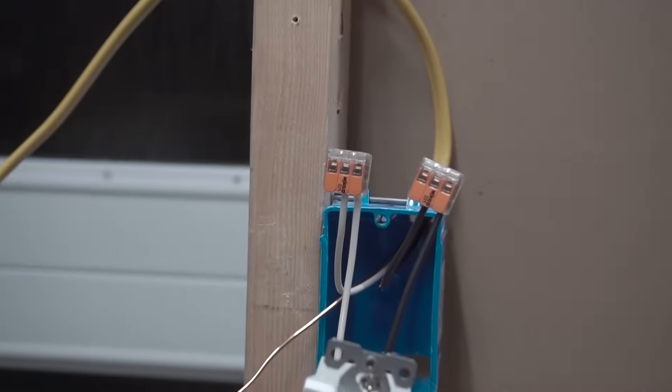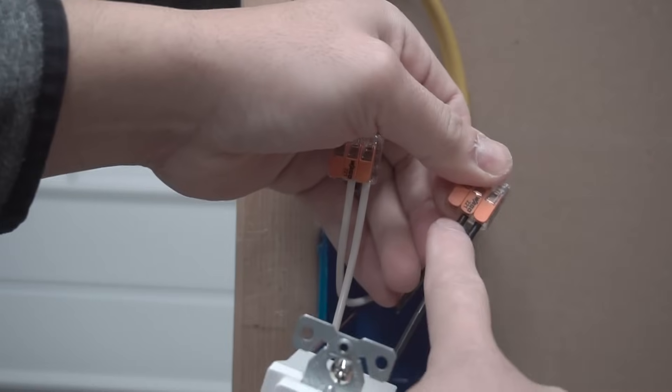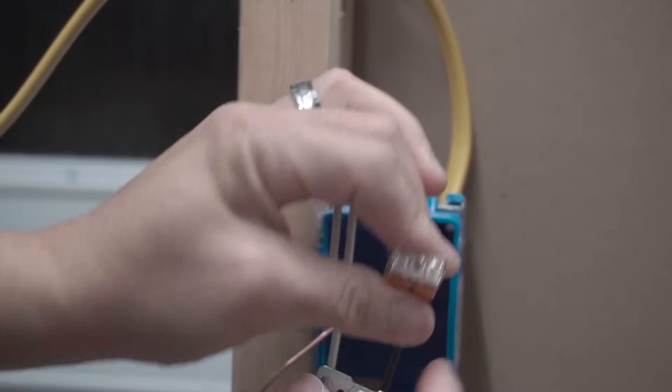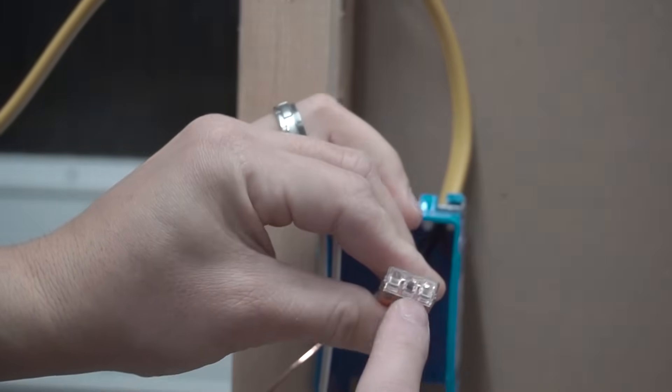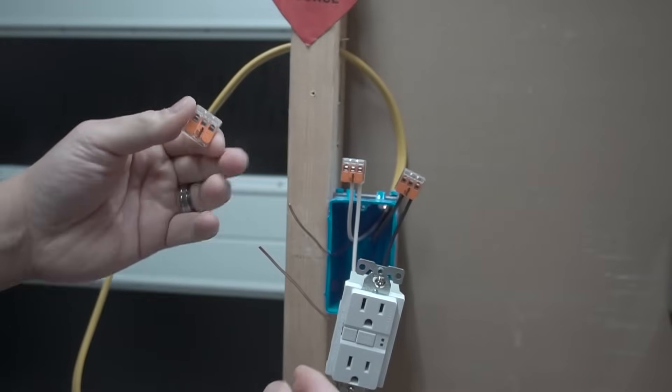Now another key thing that I want to show you is make sure that when you're wiring this there is no exposed copper onto the WAGOs and make sure that on the top ceiling of the WAGOs, you can see that it is touching up there of the wire.